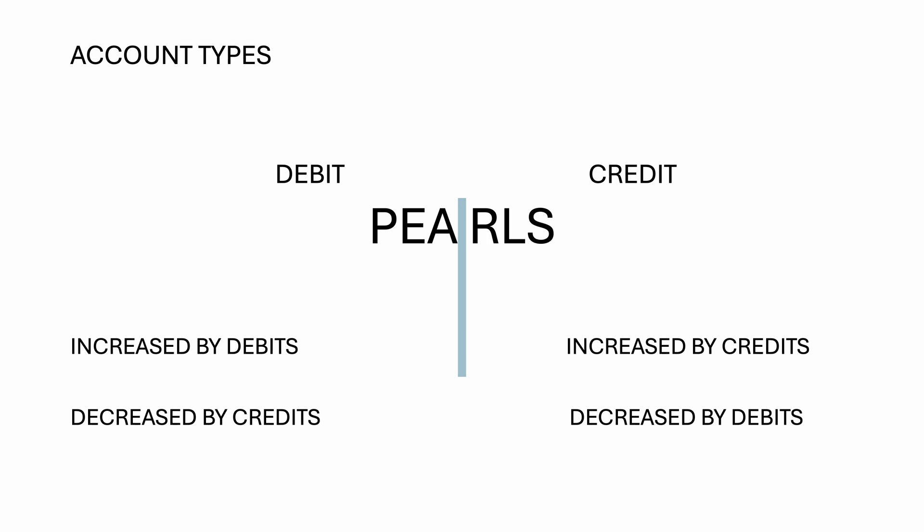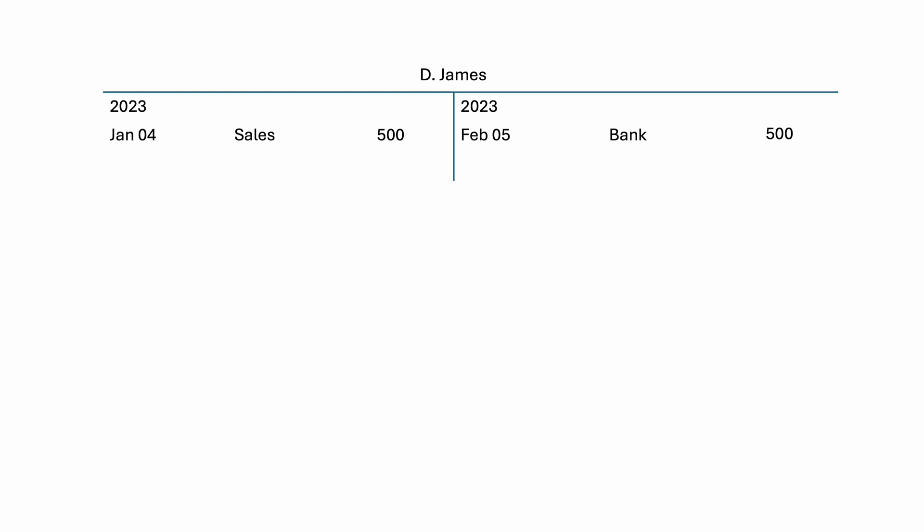Let us now dive into the balancing off of the accounts. Here is an account, D. James, who is a trade receivable. Trade receivable accounts have a debit balance. To balance off this account, first find the totals of the debit side and the credit side. The total on the debit side is 500, and the total on the credit side is 500. Subtracting the two totals gives 0, which means that D. James has paid up all that he owed at the end of the financial period.